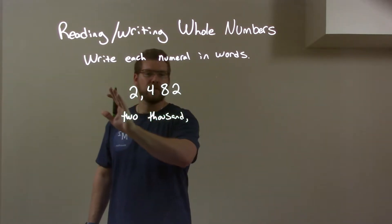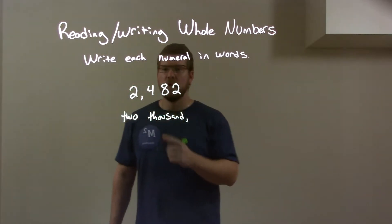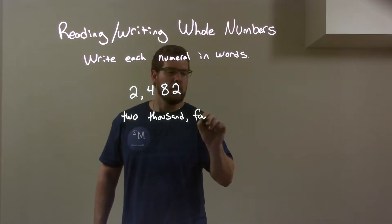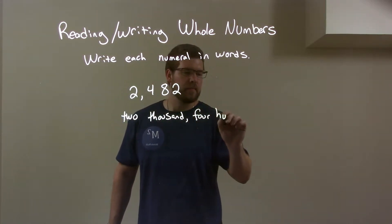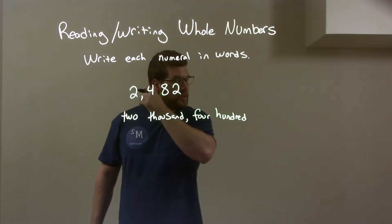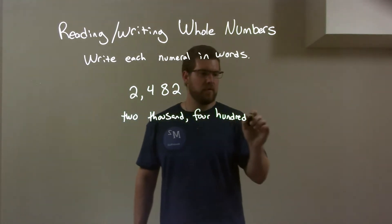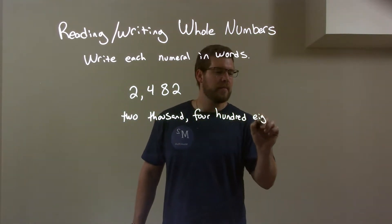So after that I ignore the 2 and look at 4, 8, 2. So 4 is 400. Now, the 8, 2 we write as 82, right? So, 482.